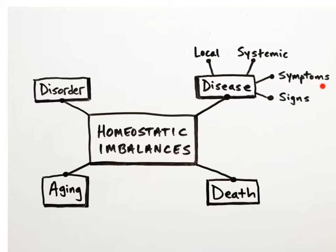Symptoms of a disease are subjective changes in body functions that are not visible to an observer, such as anxiety, headaches, and pain. Signs, on the other hand, are objective changes that are both observable and measurable, such as rashes, fevers, or high blood pressure.